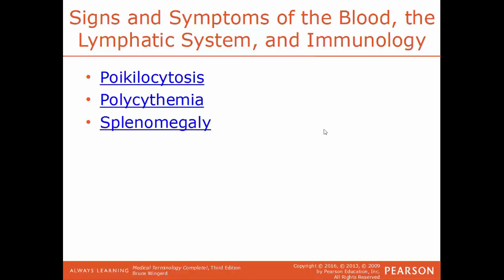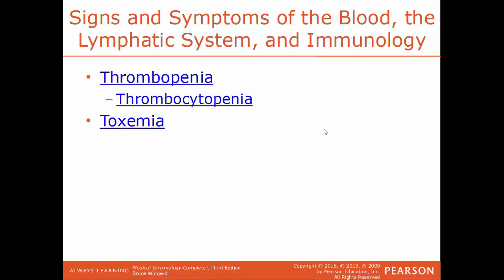Splenomegaly is an abnormal enlargement of the spleen — organs don't get larger without a cause. Thrombopenia is an abnormal reduction of thrombocytes or platelets, which are critical for blood clotting during an injury. This condition can also be called thrombocytopenia — both terms reference the same condition.